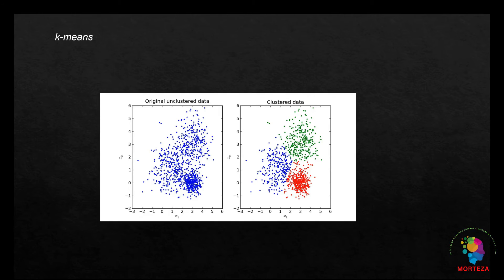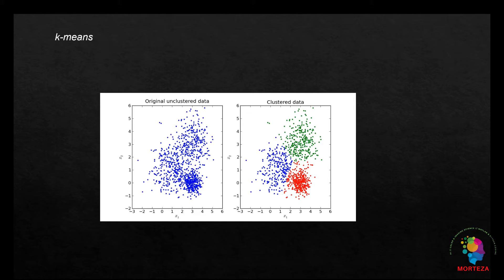The k-means algorithm takes an iterative approach to generating clusters. The parameter k specifies the desired number of clusters to generate. The algorithm begins with an initial set of cluster centers. Each pixel in the image is then assigned to the nearest cluster center using distance in n-dimensional space as the distance metric. Each cluster center is then recomputed as the centroid of all pixels assigned to the cluster. This process repeats until the desired stopping criterion is reached, like the maximum number of iterations. The centroids are like the end-members in the hyperspectral image.